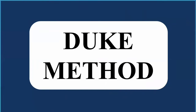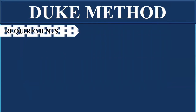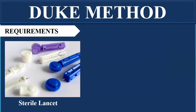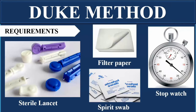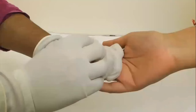To perform the Duke method and detect the bleeding time, there are specific requirements. You need a sterile lancet set to prick or make a cut into the superficial surface of the body, a filter paper, a spirit swab, and a stopwatch. All these things are required to perform the Duke method.